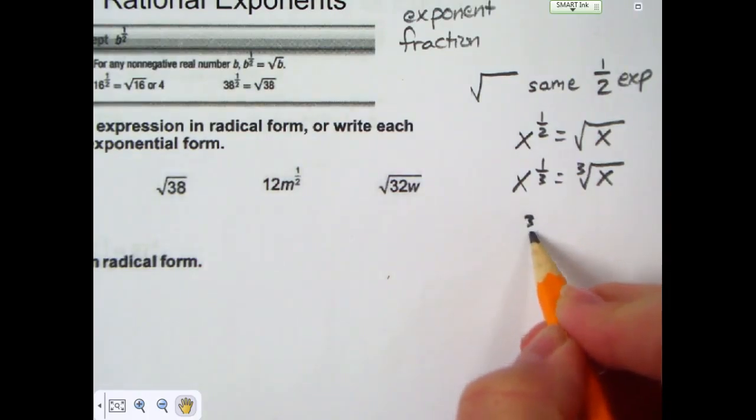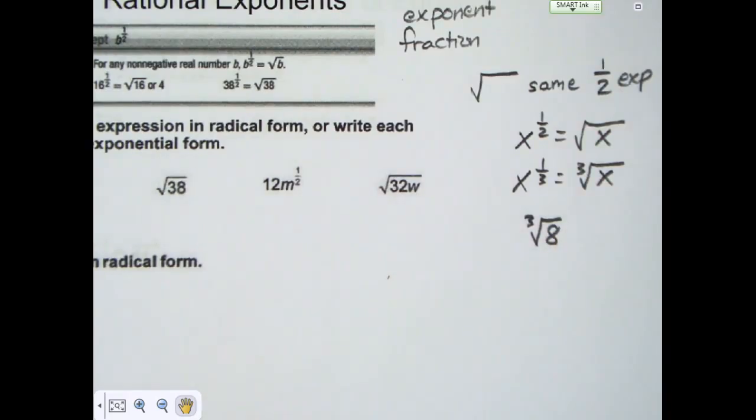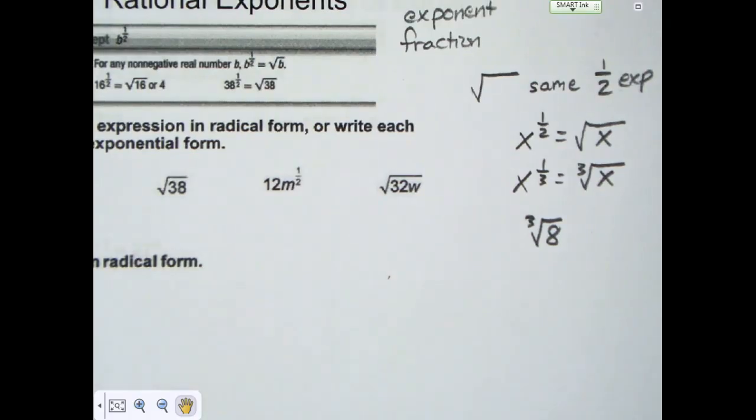So the cube root of 8 as an example. The cube root of 8 means you're thinking about what number can I multiply by itself three times and get 8.